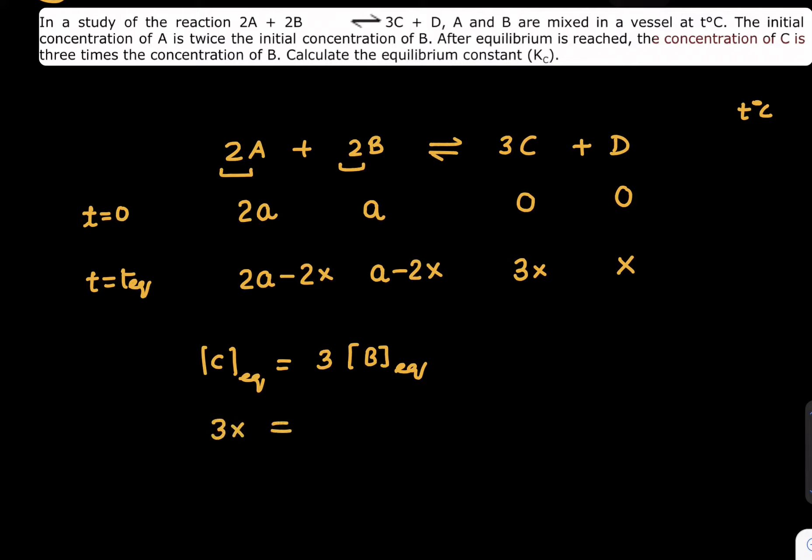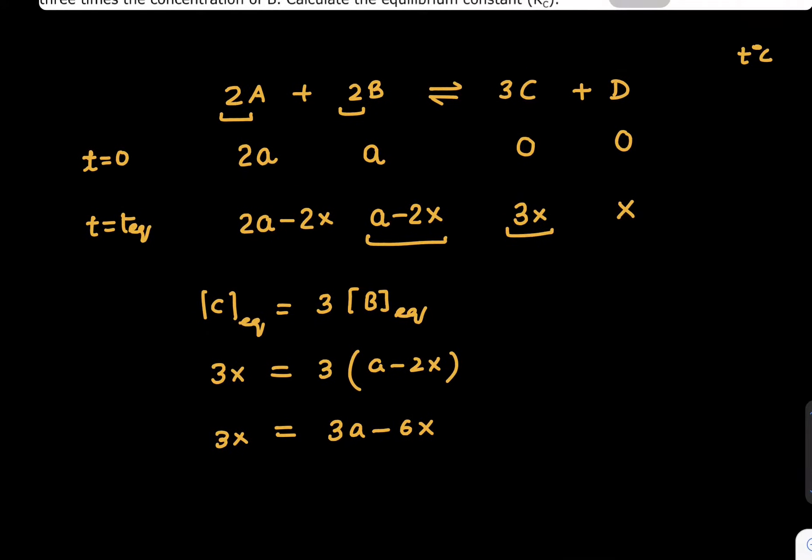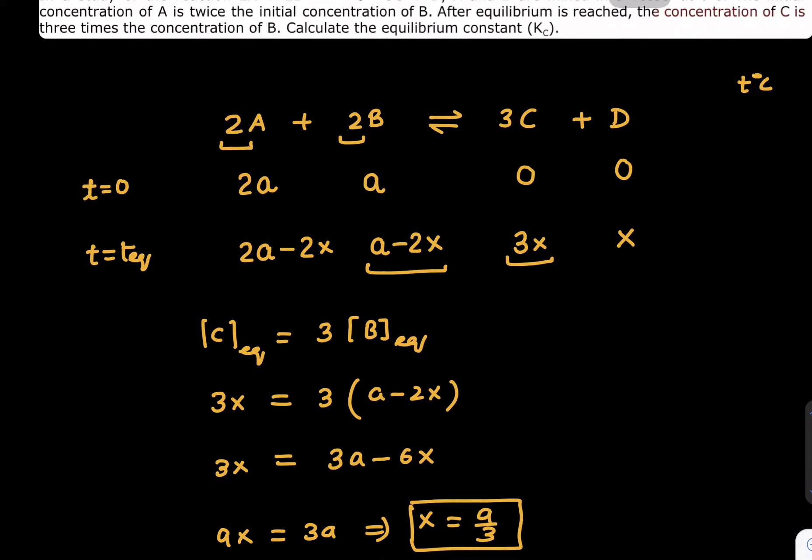If you use this logic, can we say 3x = 3 times B? B is how much? This is 3x and this is a - 2x. So you can say 3x = 3(a - 2x). This becomes 3a - 6x = 3x, so 9x = 3a, or x = a/3.